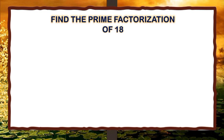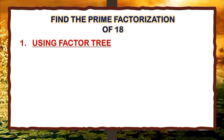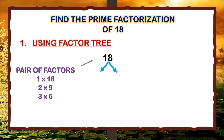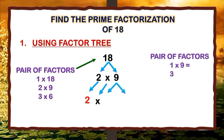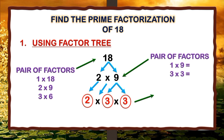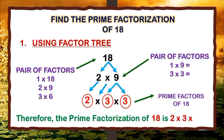Now let us find the prime factorization of 18 using the factor tree. First step is to list all the pair of factors of 18. Then choose one pair of factors — in this case, 2 times 9. 2 is a prime number and 9 is a composite number. Since 2 is a prime number, we write it down with the multiplication symbol. For 9, we list all the pair of factors and choose 3 times 3. Therefore, the prime factorization of 18 is 2 times 3 times 3.